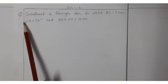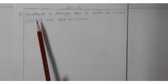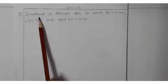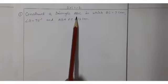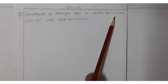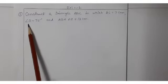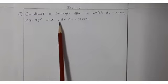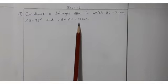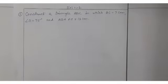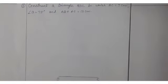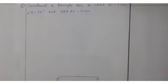Exercise 11.2, question number one — a very important and nice question. Construct a triangle ABC in which BC is equal to 7 centimeter, angle B is equal to 75 degrees, and AB plus AC is equal to 13 centimeter. First of all, we have to draw one line segment BC which is 7 centimeter.